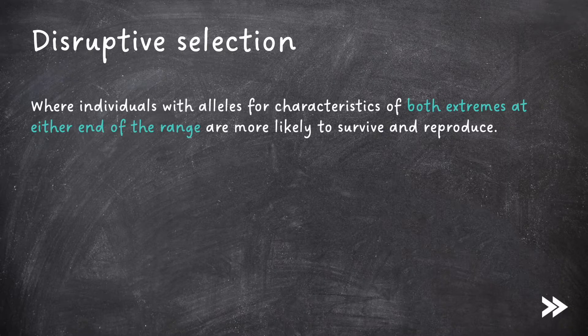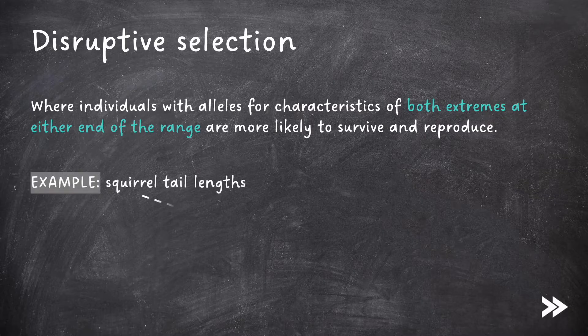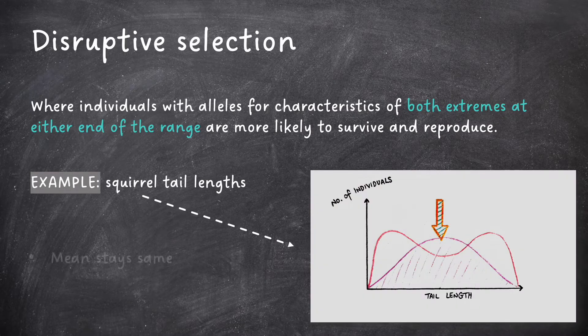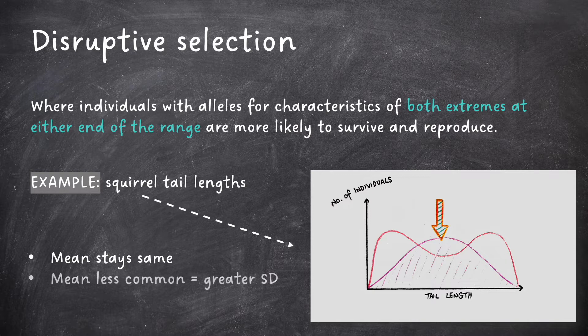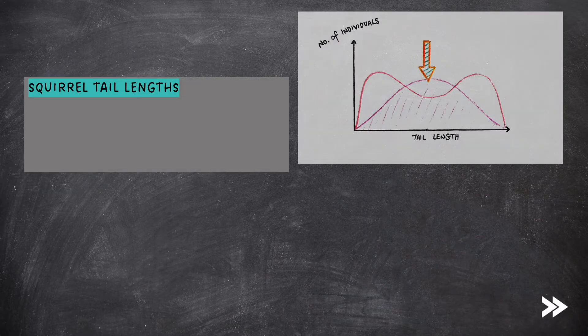Disruptive selection is where individuals with alleles for characteristics of both extremes at either end of the range are more likely to survive and reproduce. An example of disruptive selection includes squirrel tail lengths. In disruptive selection, the mean stays the same, and the mean becomes less common, resulting in a greater standard deviation, i.e. a greater spread of values about the mean. The example of squirrel tail lengths probably won't come up in your exam — they'll probably give you a different example — but it's the general principle of disruptive selection that will always be the same.